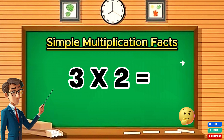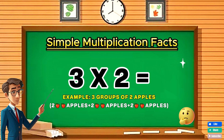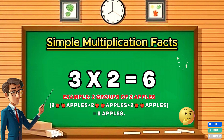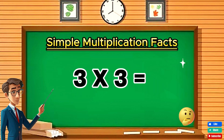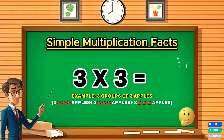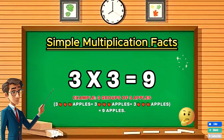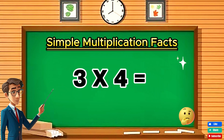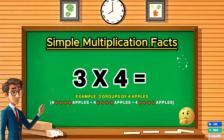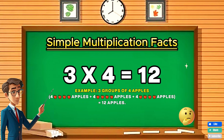Question eight: Three times two equals? Three times three equals? Question nine: Three times three equals nine. Question ten: Three times four equals twelve.